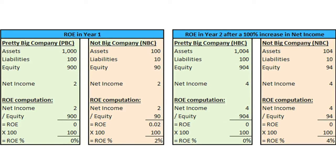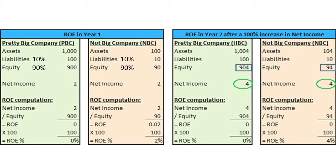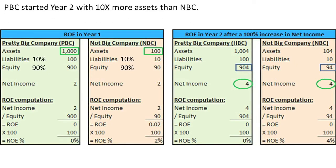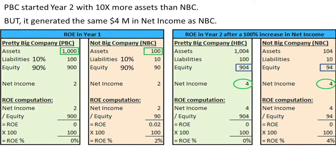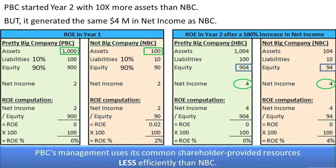Here's something else to watch out for. If two companies were to both earn $4 million of net income, and both had the same financing structure at the beginning of the year of 90% equity and 10% debt, you would still need to know both of their shareholder equity amounts to compute their ROEs. In fact, some users average the beginning and ending shareholder equity and use that as the denominator in the ROE formula. In the example below, Pretty Big Company (PBC) started year 2 with 10 times the amount of assets that Not Big Company had, but it still only generated the same $4 million in net income. Based on the ROE of the two companies, it is clear that NBC is using its assets more efficiently than PBC in generating profits for its common shareholders, as noted by its higher ROEs in years 1 and 2.